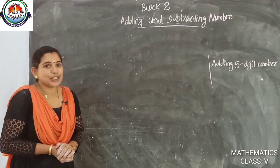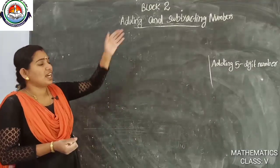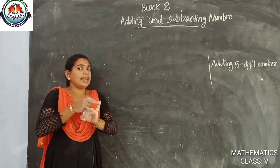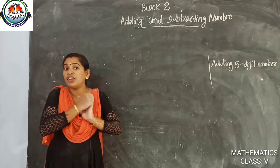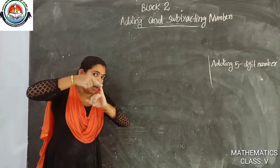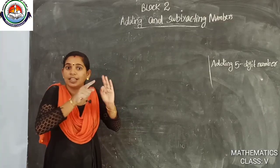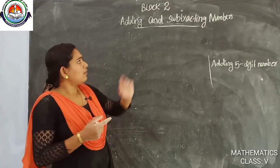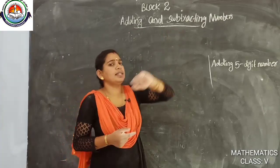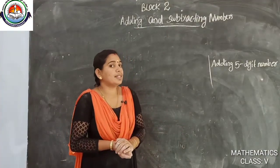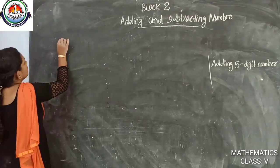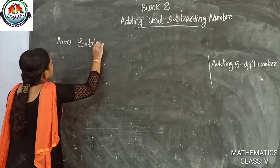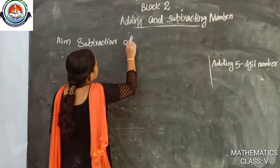Good morning children. In the previous class we were discussing the operations of five digit numbers — specifically addition of five digit numbers. Do you remember how many methods we followed? Three methods: using abacus, using place value chart, and without abacus and place value chart. Our chapter is adding and subtracting numbers. Addition is finished, so next is subtraction. Our topic today is subtraction of five digit numbers.